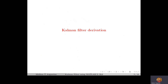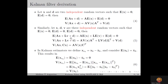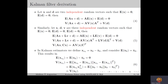Next, we move on to the Kalman filter derivation. Let's start by recalling the results on the expectation and variance of affine transformations. Let x and d be two independent random vectors such that E[x] = 0 and E[d] = 0. Then, the expectation of the affine transformation Ax + d will be equal to 0, and the variance of Ax + d will be equal to A·V(x)·A^T plus V(d). We derived these results in lecture number 3.